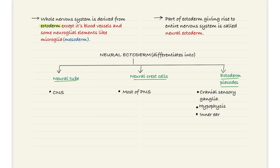Starting with the development of the nervous system. There are three germ layers: the ectoderm, the mesoderm, and the endoderm. The whole of our nervous system is derived from ectoderm, except its blood vessels and some of the neuroglial elements like the microglia, which is derived from the mesoderm. The part of ectoderm giving rise to the entire nervous system is known as neural ectoderm. This neural ectoderm differentiates further into three parts: the neural tube, the neural crest cells, and the ectodermal placodes. The neural tube gives rise to the central nervous system, the neural crest cells gives rise to most of the peripheral nervous system, and the ectodermal placodes give rise to cranial sensory ganglia, hypophysis, and the inner ear.